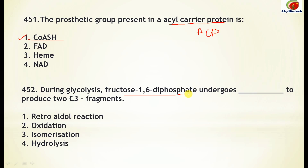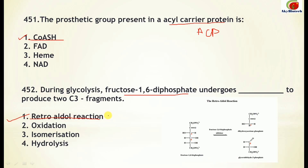The answer is that fructose 1,6-bisphosphate undergoes a retroaldol reaction. The enzyme involved is fructose 1,6-bisphosphate aldolase. As you can see here, this reaction produces two C3 fragments: dihydroxyacetone phosphate and glyceraldehyde 3-phosphate — these are the two three-carbon compounds produced.